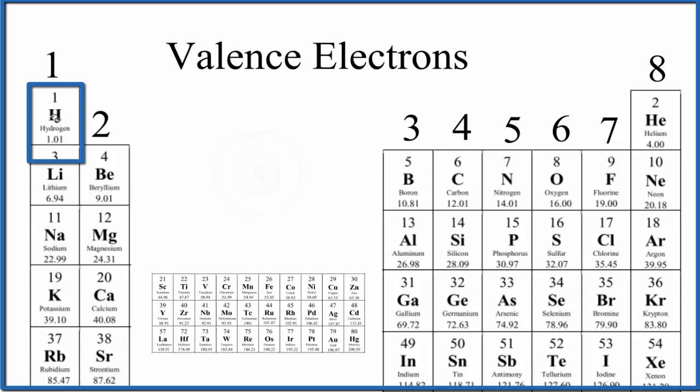So for example, if we looked at hydrogen, hydrogen only has one proton, so it only has one electron, and that's in the first energy level here. Hydrogen has one valence electron, and that valence electron is available to form chemical bonds.